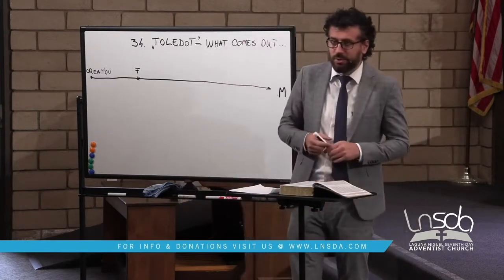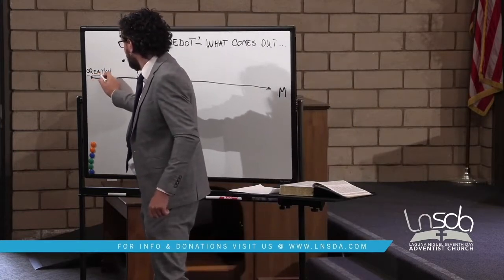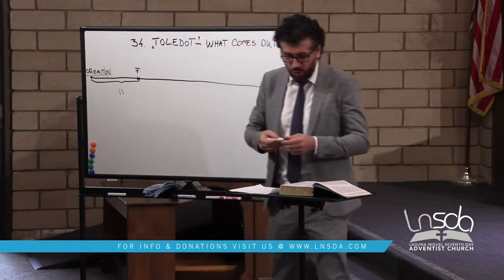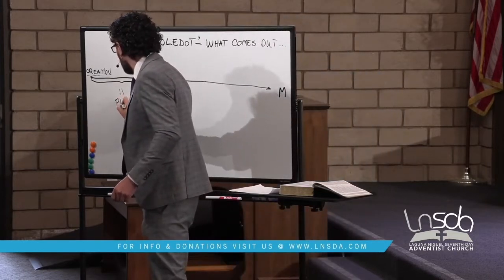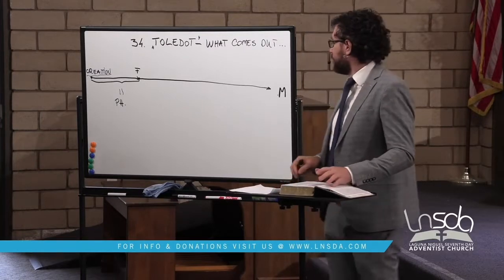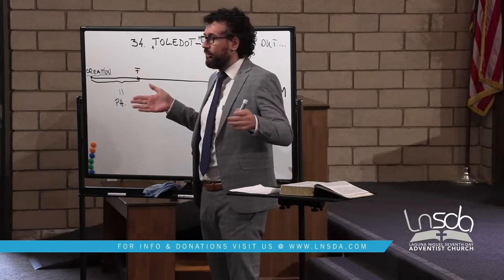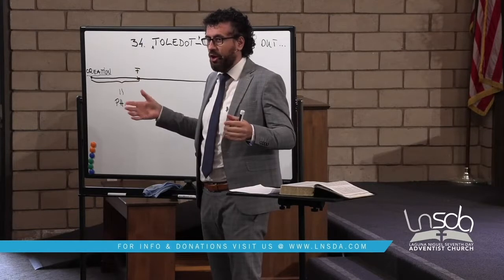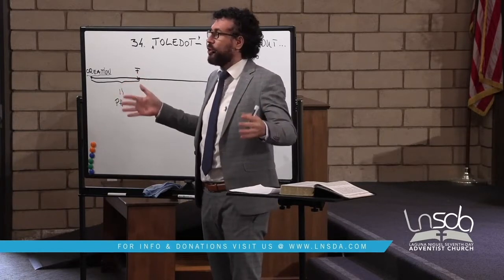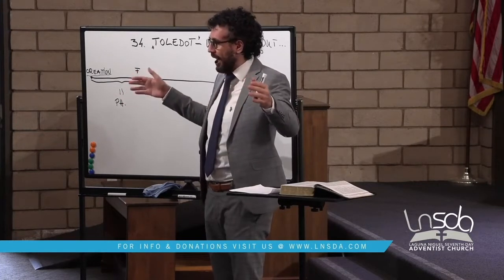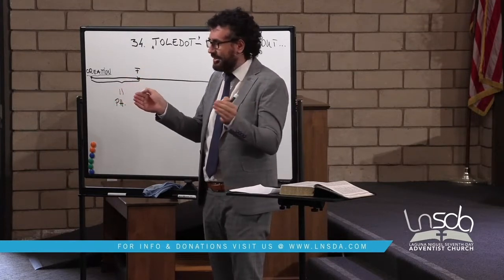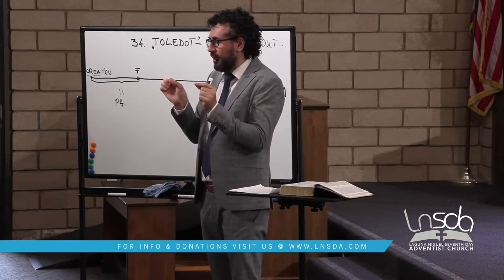Genesis, as the name indicates, starts with creation. The first 11 chapters is what is called proto-history. 'Proto' means first, so it means the first history. If you look at the book of Genesis, you will see that the first 11 chapters are very condensed history — all that period of the patriarchs who lived long, long lives, some almost a thousand years, given to us in a very concise and compacted way.